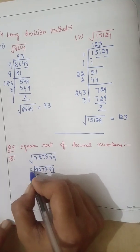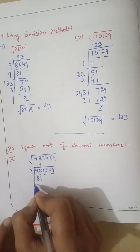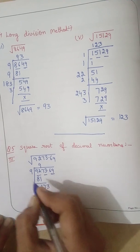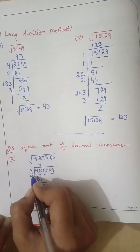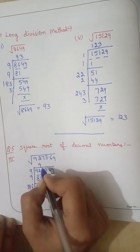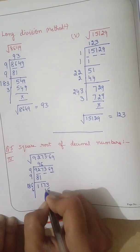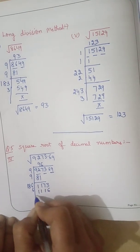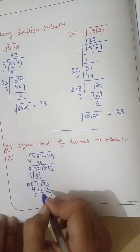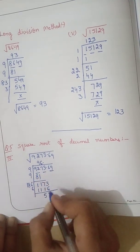It is divisible by 9. 9 times 9 is 81. 2 minus 1 is 1, 9 minus 8 is 1. 73. We will write the full pair here. 9 plus 9 is 18. Now it is divisible by 6. 6 times 6 is 36, 6 times 8 is 48 plus 3 is 51. 6 times 1 is 6 plus 5 is 11. 13 minus 6 is 7. 6 minus 1 is 5. Now it is the point. We will write point here. 69.